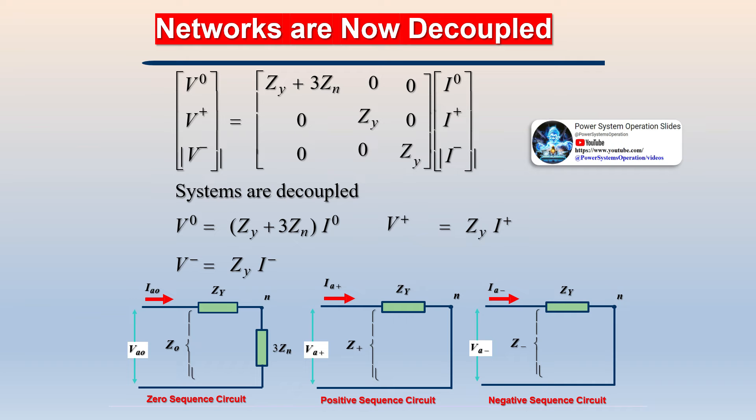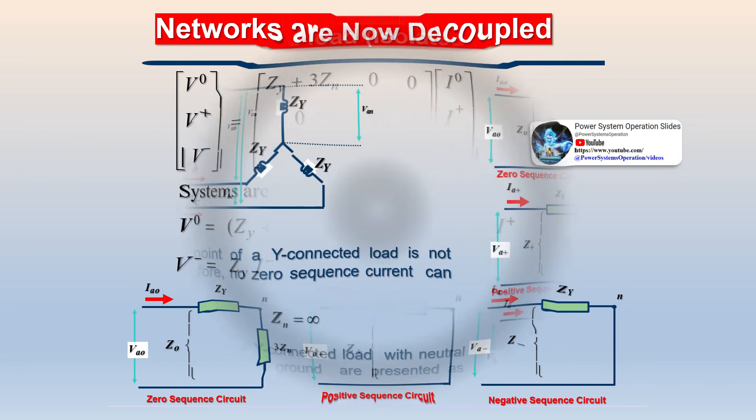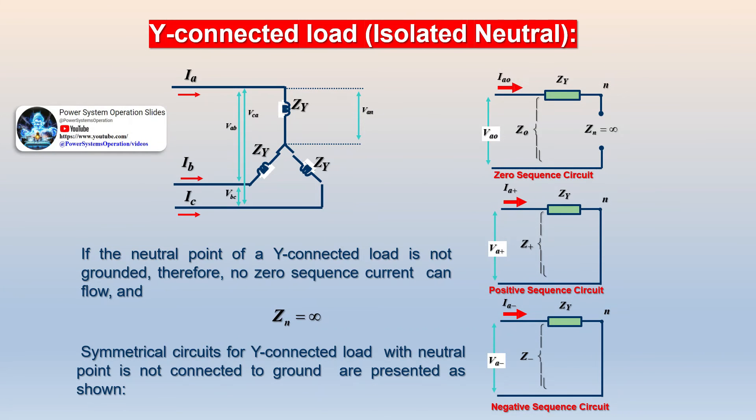The balanced set of components can be given as a positive sequence component, negative sequence component, and zero-phase sequence component.